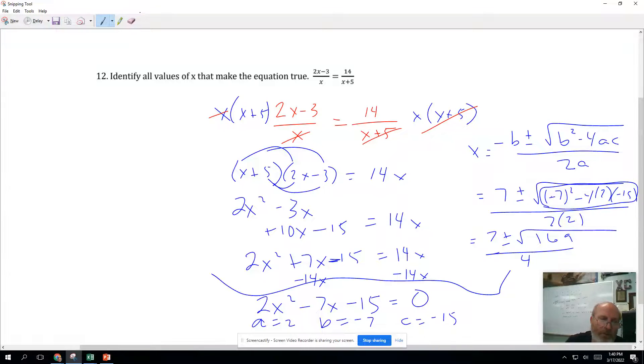I'm going to come over here and do this. Your answers are X equals 7 plus square root of 169 is 13 over 4. And X equals 7 minus 13 over 4. This is going to be 20 over 4, which is 5. And this is going to be negative 6 over 4, which would simplify to negative 1.5 or negative 3 halves.